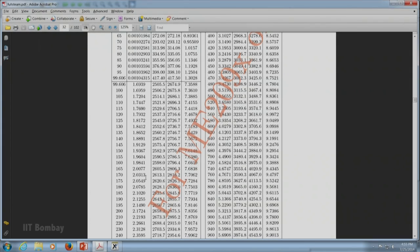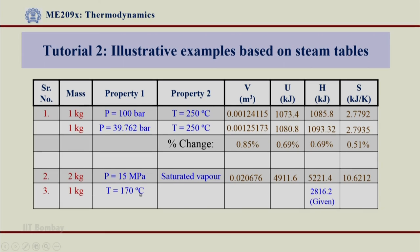Please note all the values of V, U, H, and S from that table accordingly — that is our answer. This is 1 kg, T equals 170°C. Given enthalpy was H equals 2816.2 kJ/kg. We found by trial and error that P equals 0.1 MPa, and we obtained the values of V, U, and S at this temperature. The enthalpy 2816.2 confirmed we are in the superheated zone. Thank you very much.